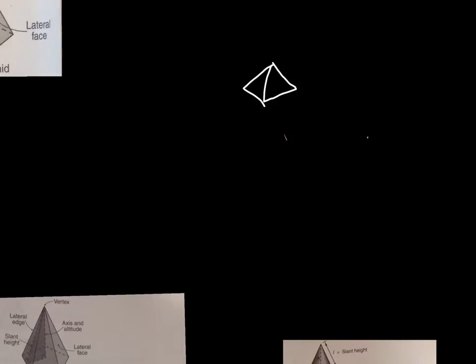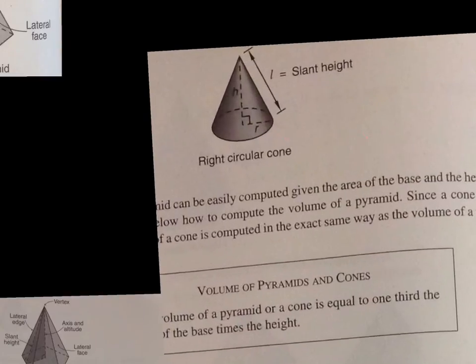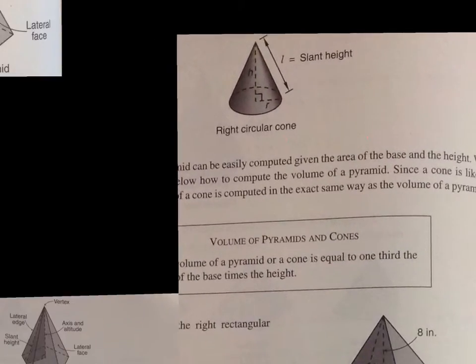Notice the cone has what is called a slant height. It's the distance from the base to the top, how long it is. And notice it's different than the altitude. The altitude is the straight up and down at a right angle. So it makes a triangle. The slant height and the altitude is going to make a triangle. In fact, it's going to make a right triangle.